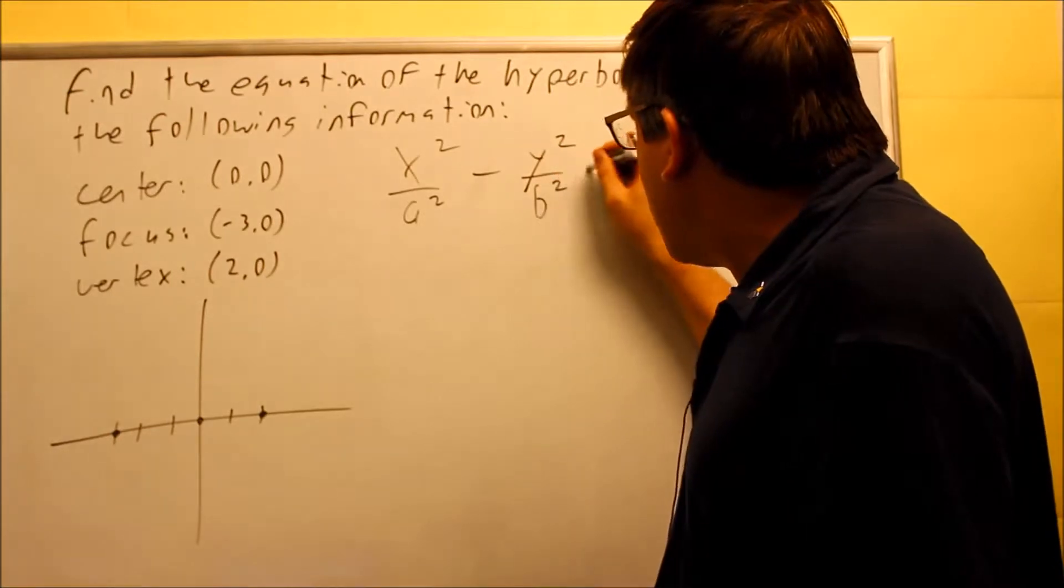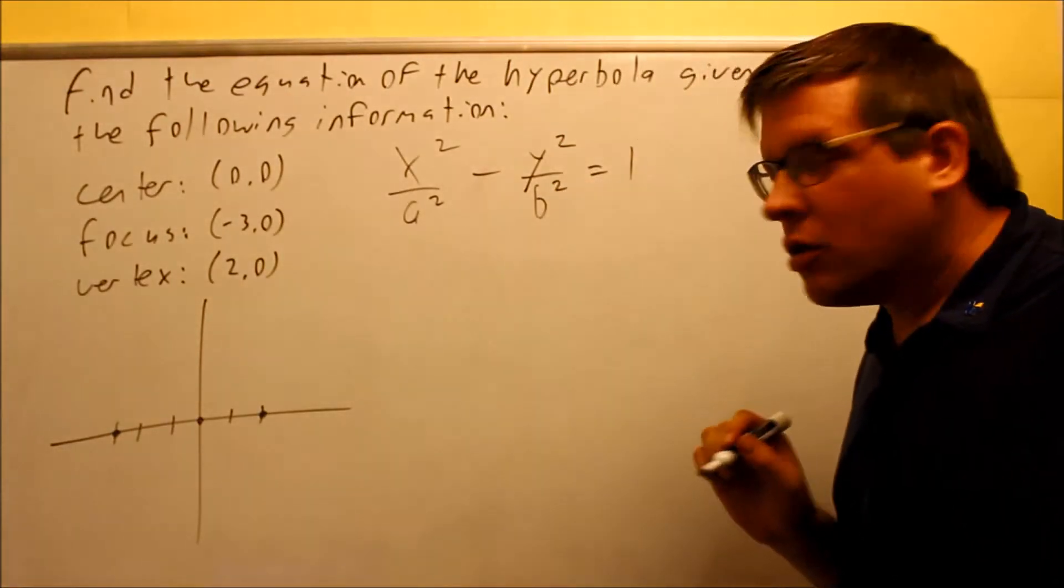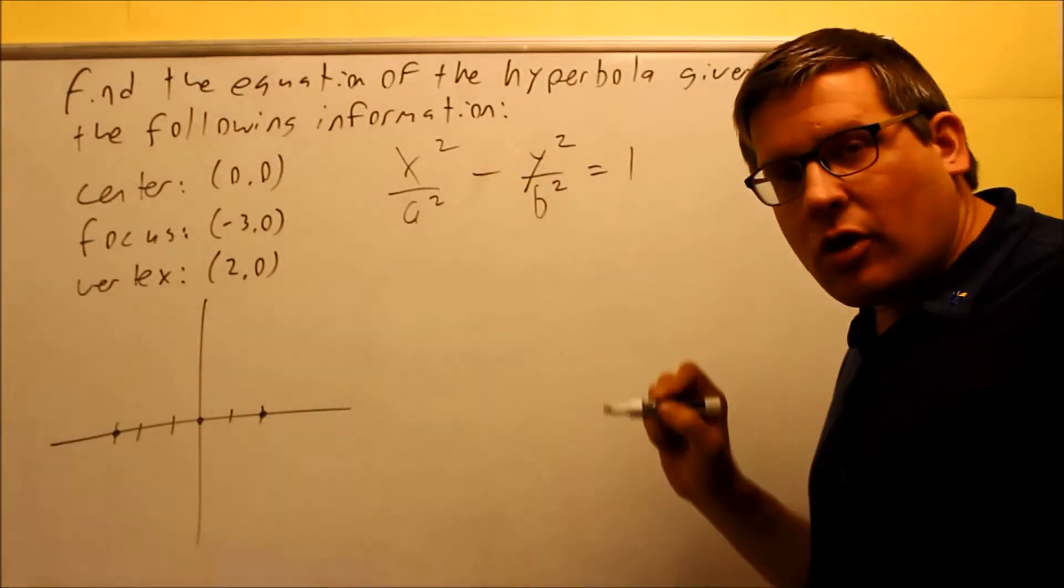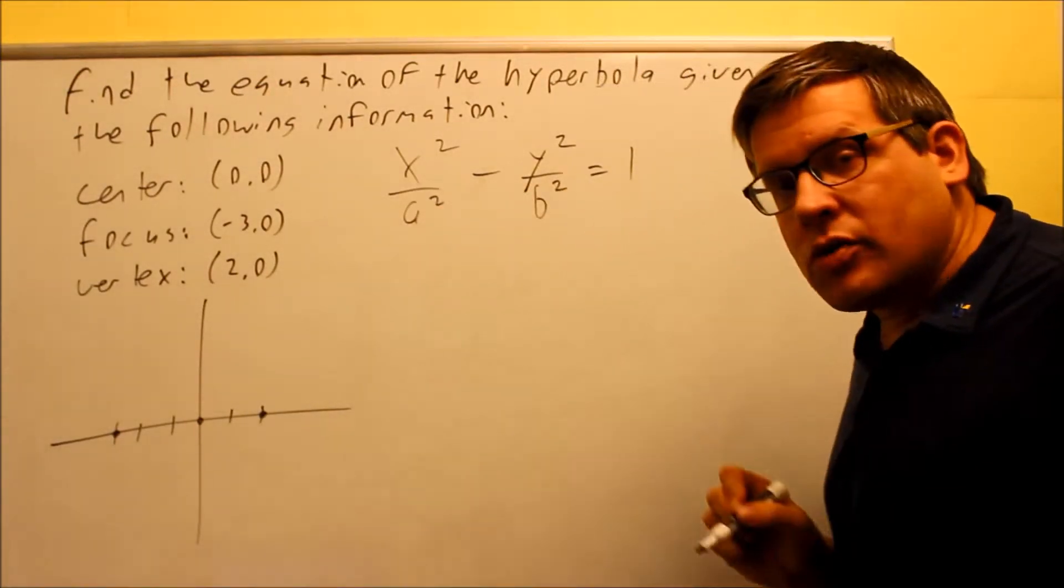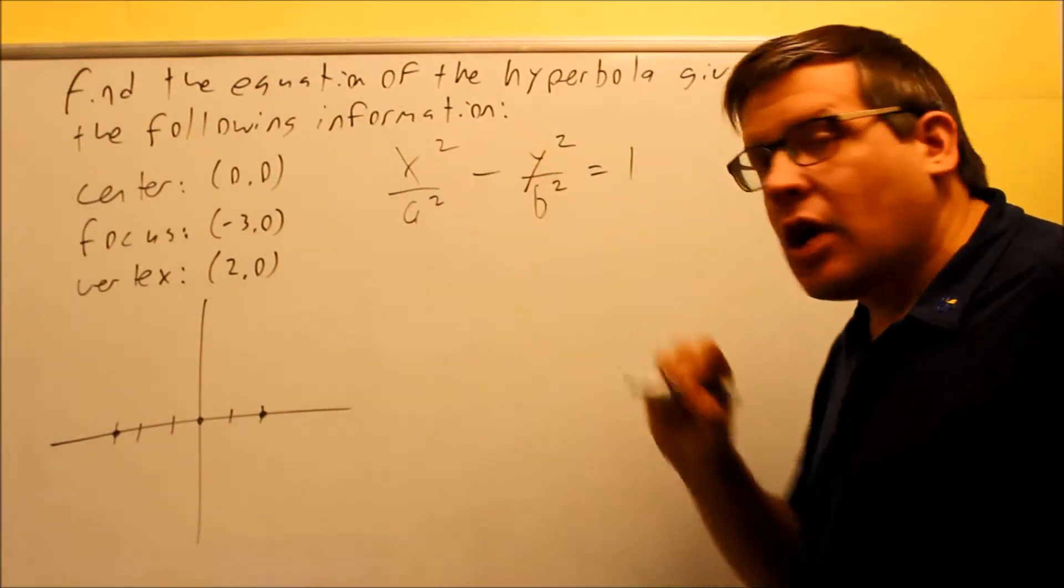So I have, remember you have a minus sign in there because it is a hyperbola. The x comes first because it opens up sideways and a² is actually always going to come first regardless of what letter you have on top.